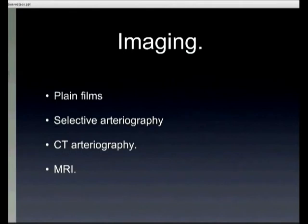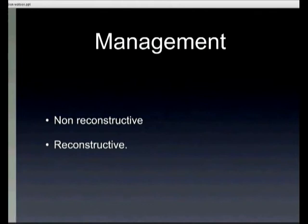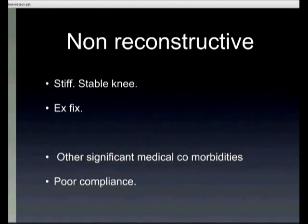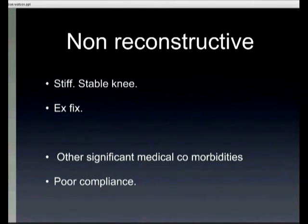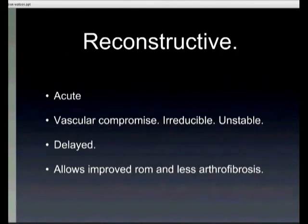For reconstructive management, the decision is whether to do it acutely. Acute reconstruction might be indicated if the patient had vascular compromise, was irreducible without general anaesthetic, or was unstable. Whether or not to do a delayed reconstruction is similar to considerations in MCL-ACL injuries. Acutely — an arbitrary cut-off is three weeks — one of the main indicators for acute surgery in an isolated knee dislocation is a posterolateral corner injury, which is thought to be done open. Then you decide whether to do an acute or staged cruciate ligament reconstruction alongside that.